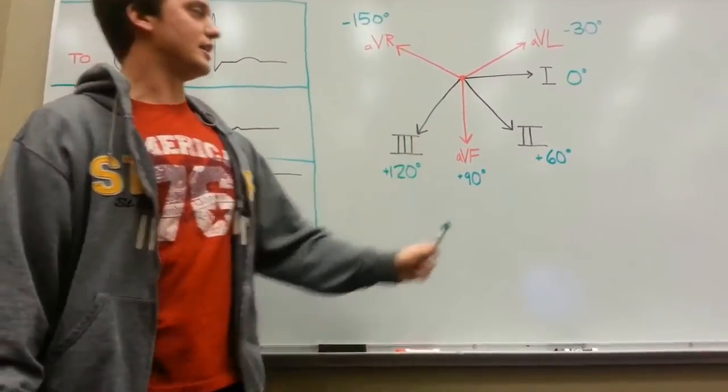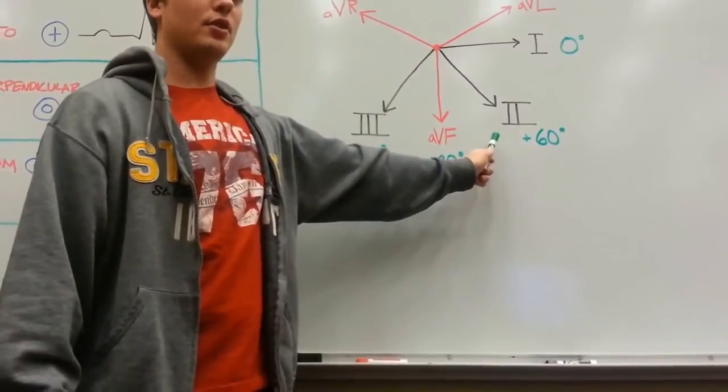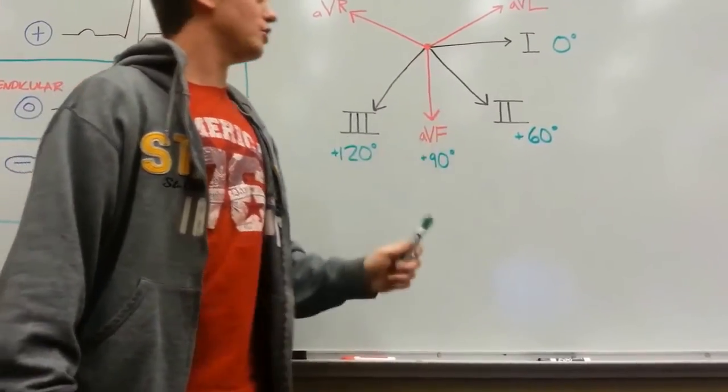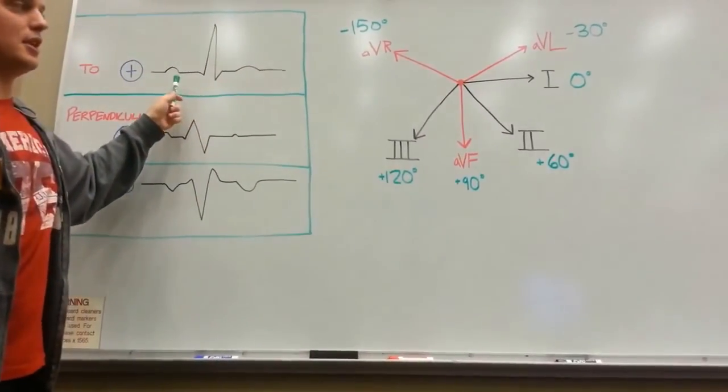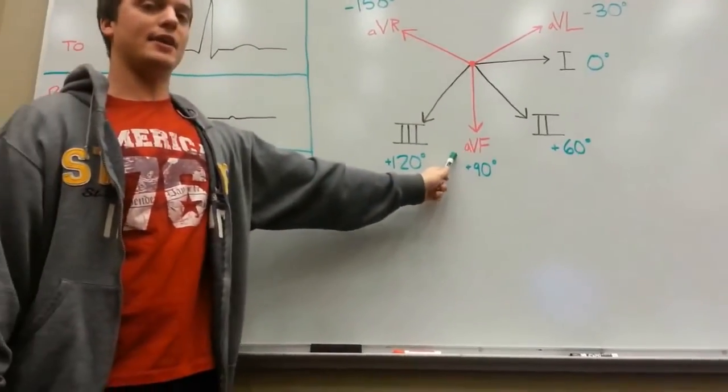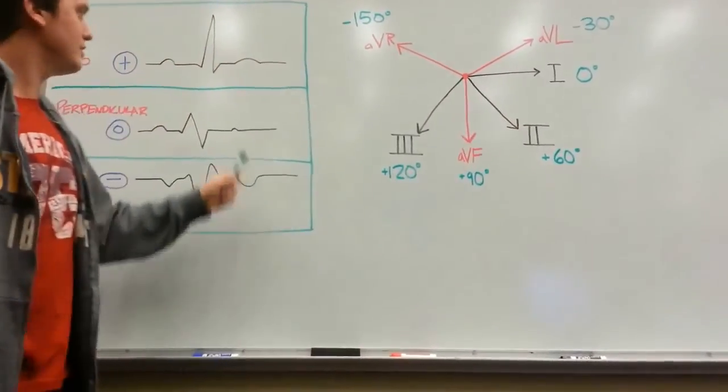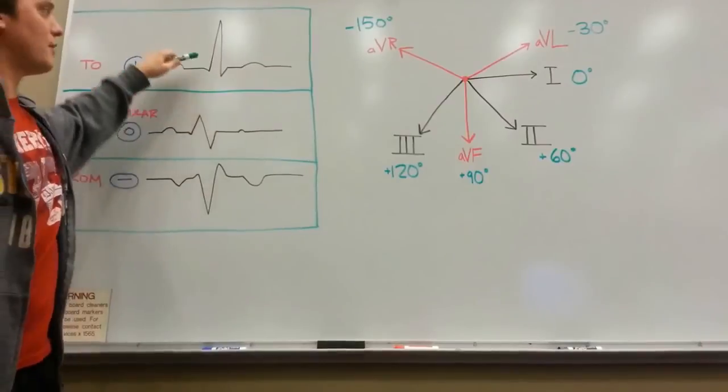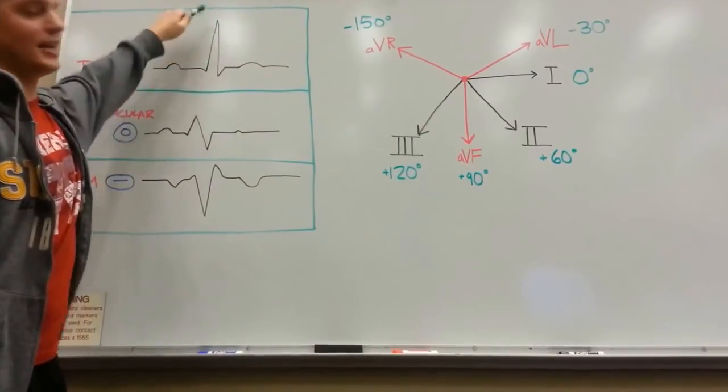Another key note is that lead number 2, which again is right along that vector of a healthy heart, should be the most positive, meaning that although ABF and 1 are positive deflections, number 2 should be by far the tallest, most positive deflection.